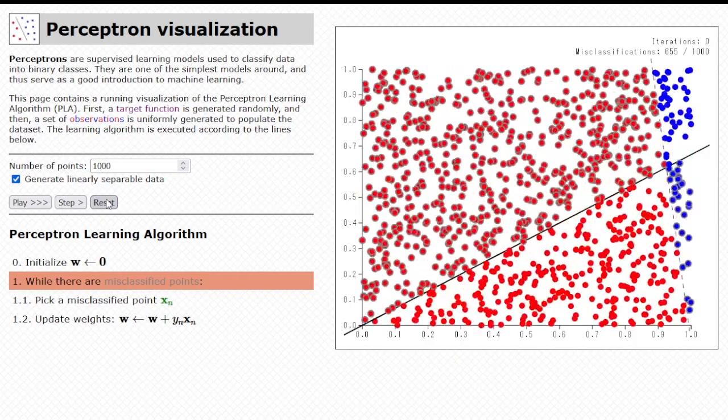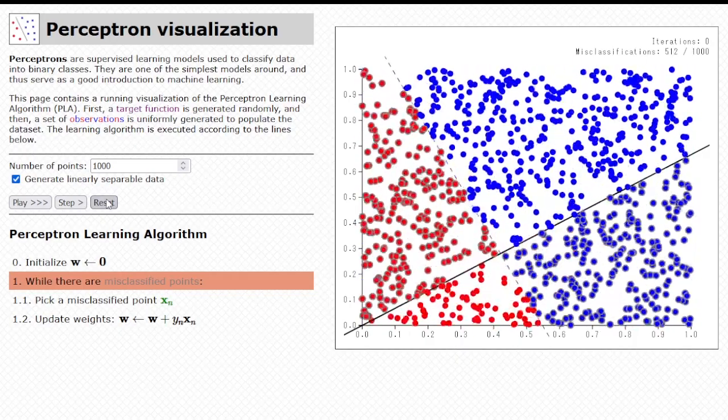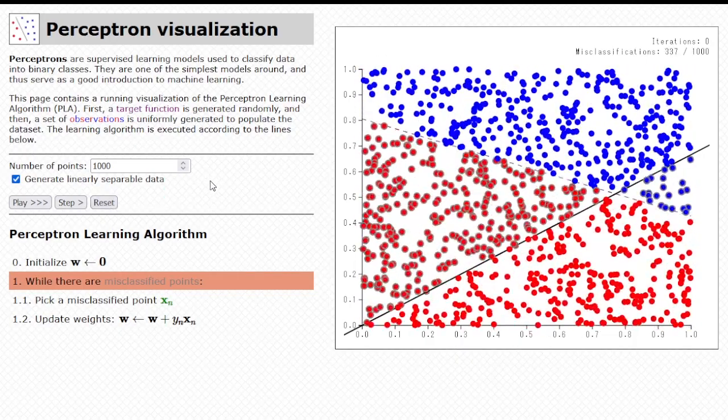For example, I don't know if you noticed, but previously the target function was not on the same place as the final perceptron. They were slightly different. If you have more points, this kind of stuff is a little bit more improbable, right? Because to classify all points correctly, you really need to narrow down the target function.